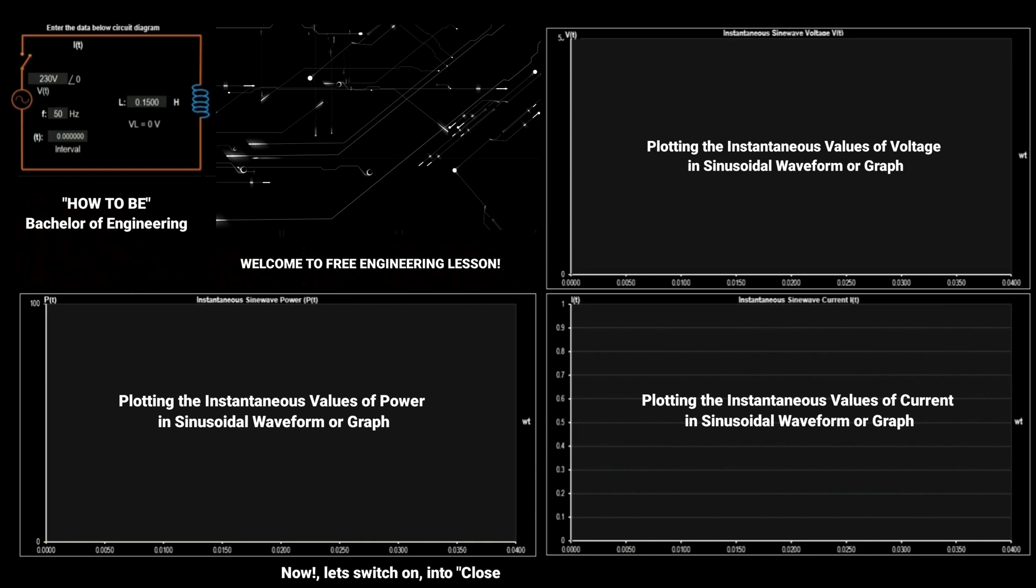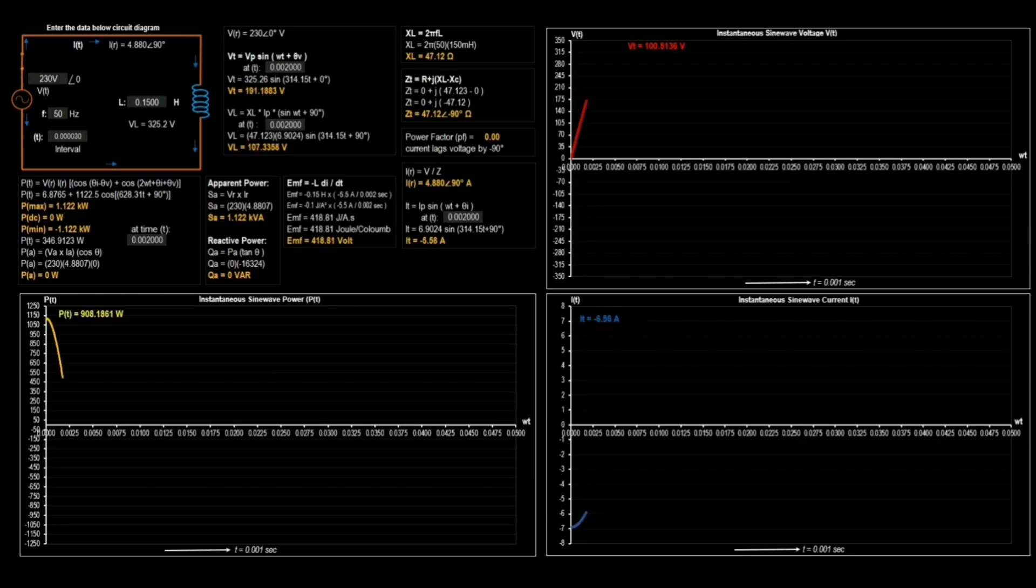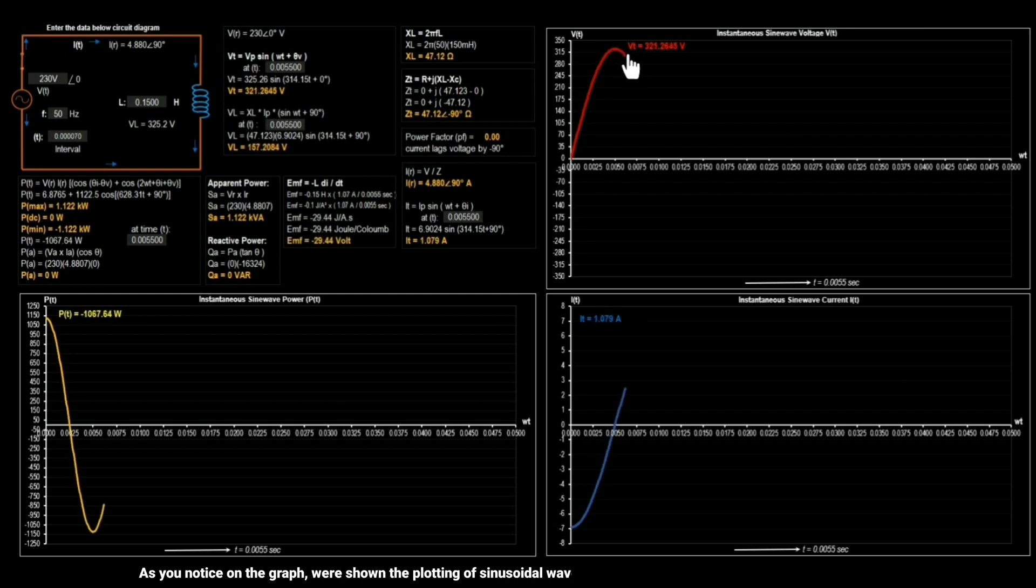Now let's switch on into close status for the circuit diagram. As you notice on the graph, we're shown the plotting of sinusoidal waveform for the result instantaneous values of voltage.